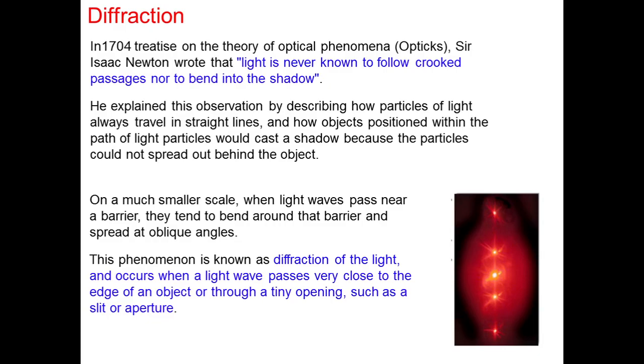Now in the 17th century Sir Isaac Newton wrote in his theory of optical phenomena called optics that light is never known to follow crooked passages nor to bend into the shadow. In his theory he explained the particles of light always travel in straight lines and how objects positioned within the path of light particles would cast a shadow because the particles could not spread out behind the object.